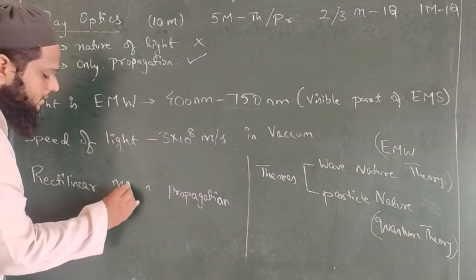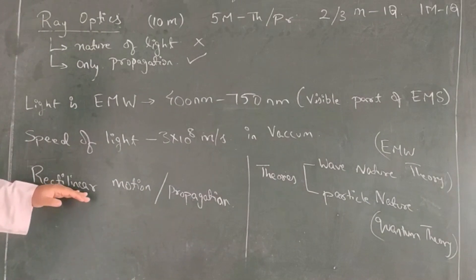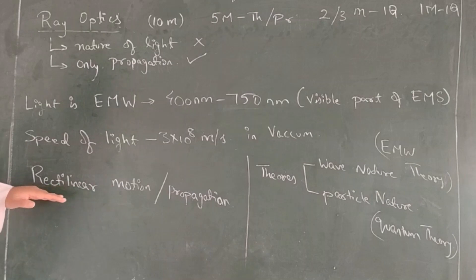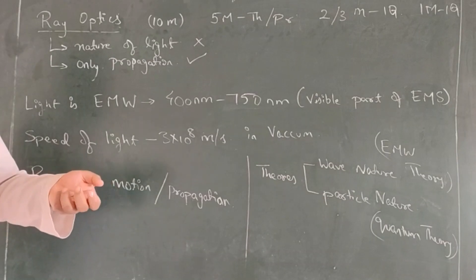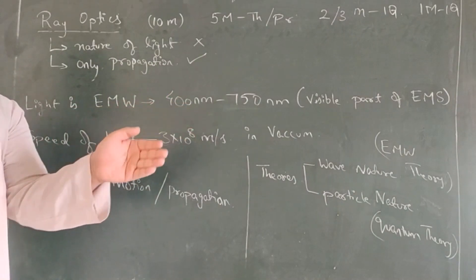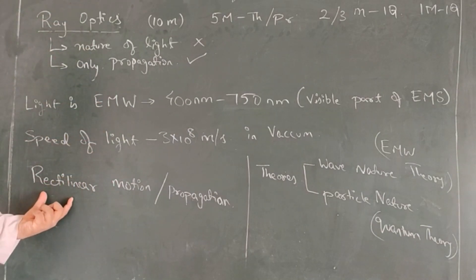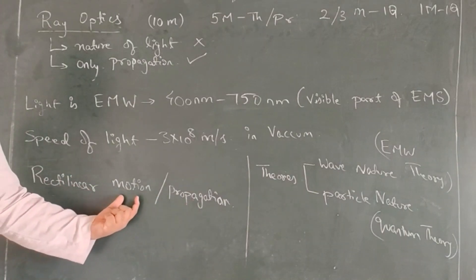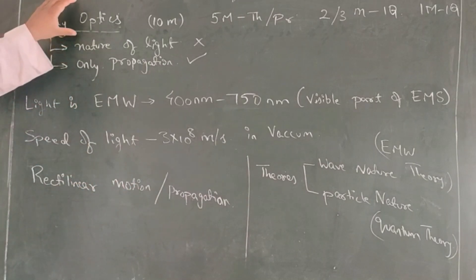What do you mean by rectilinear motion or rectilinear propagation? Rectilinear means something that travels in a straight line or path. So light follows rectilinear motion. A simple example would be a laser light — when you point and switch on the laser light, you will always see it moving in a straight line; it will never have a bend or a curve. The whole of ray optics is based on this phenomenon called rectilinear propagation.